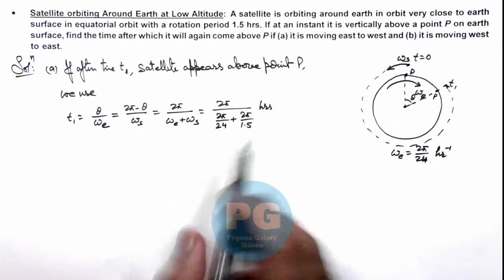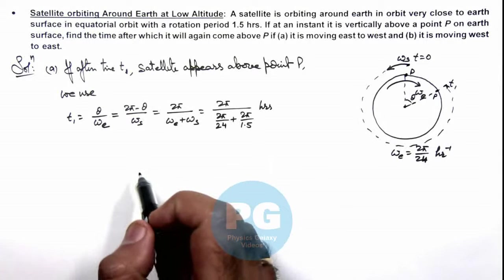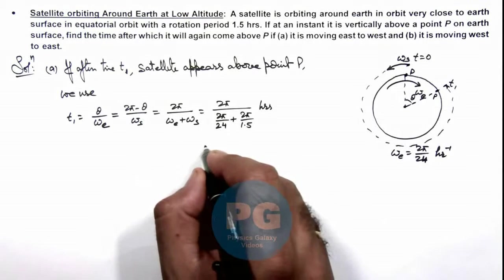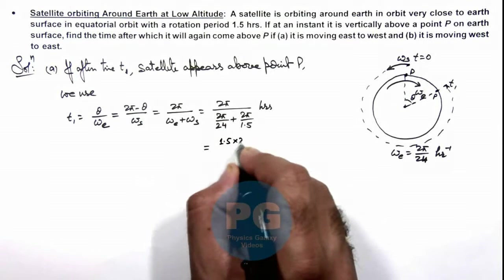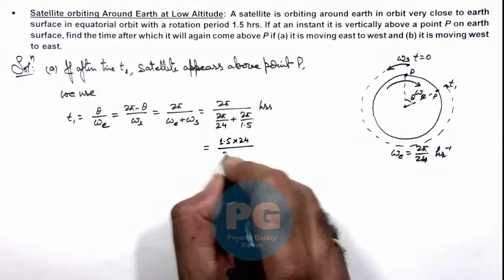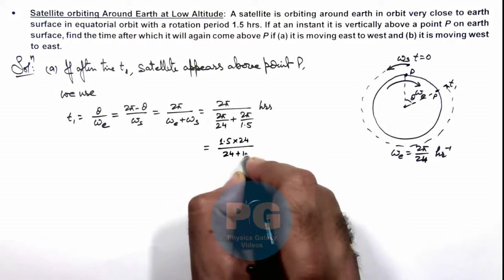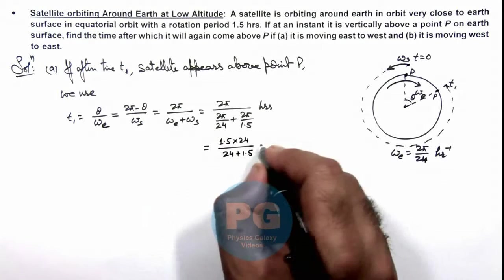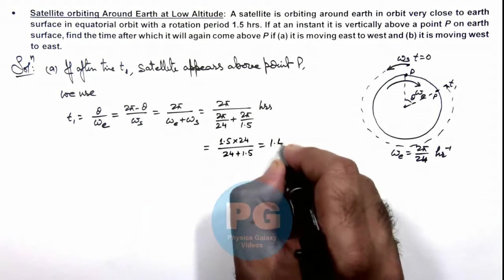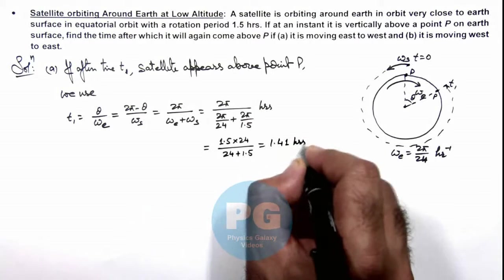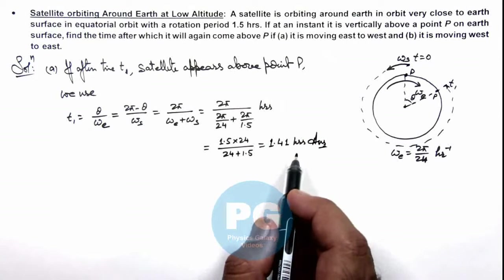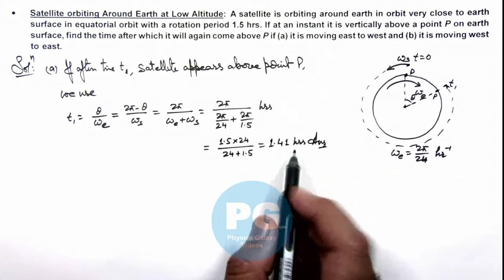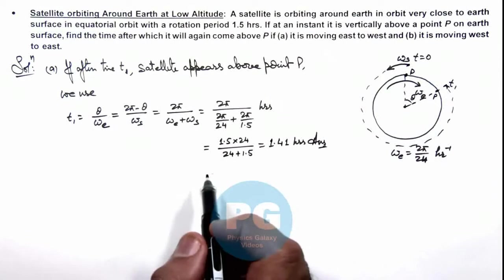Before again satellite reaches a point above P. So simplifying this will give us 1.5×24/(24+1.5), and that is equal to 1.41 hours. So that will be the result of first part of the problem, the time after which again satellite reaches above point P.